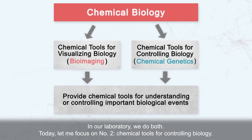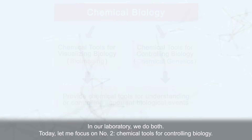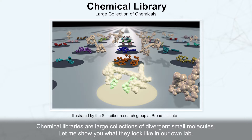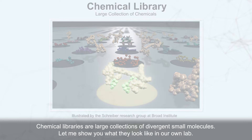In our laboratory, we do both. Today, let me focus on number two — chemical tools for controlling biology. How can we discover chemical tools? We use chemical libraries, which are large collections of divergent small molecules. Let me show you how they look in our own lab.